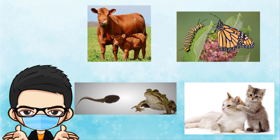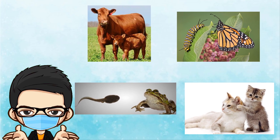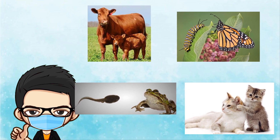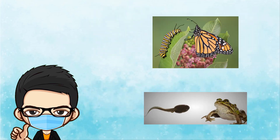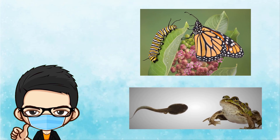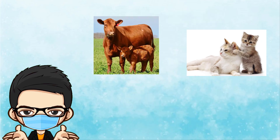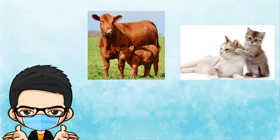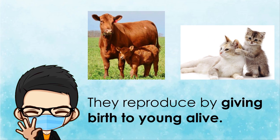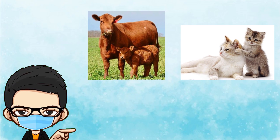Which of these animals reproduce by laying eggs? Correct — frogs and butterflies reproduce by laying eggs. What about the cats and cows? Yes, of course they reproduce by giving birth to their young alive. See how these animals look like their parents.